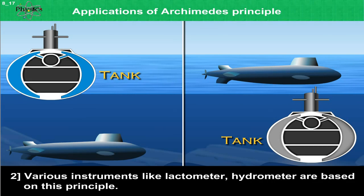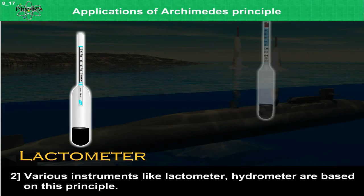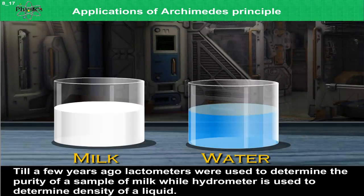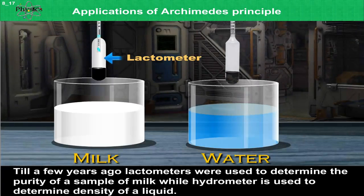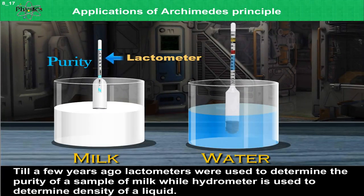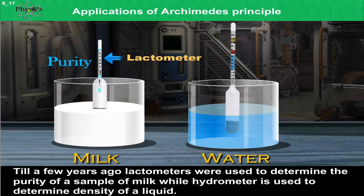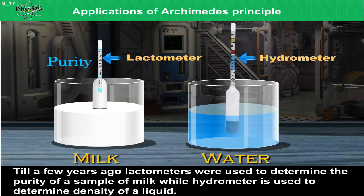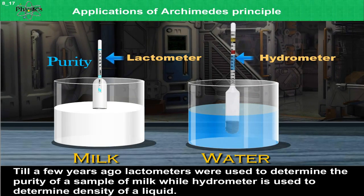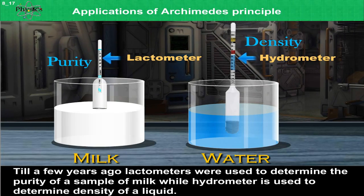2. Various instruments like the Lactometer and Hydrometer are based on this principle. Till a few years ago, Lactometers were used to determine the purity of a sample of milk, while the Hydrometer is used to determine the density of a liquid.